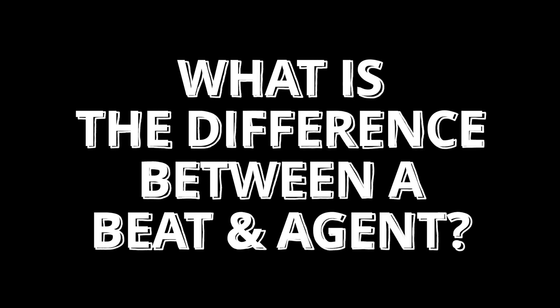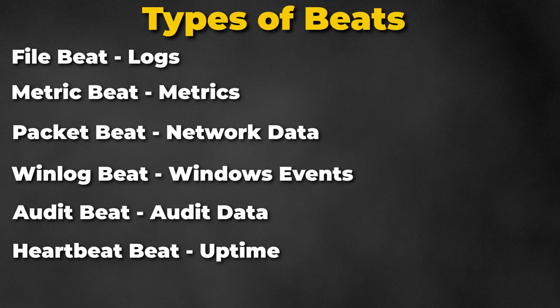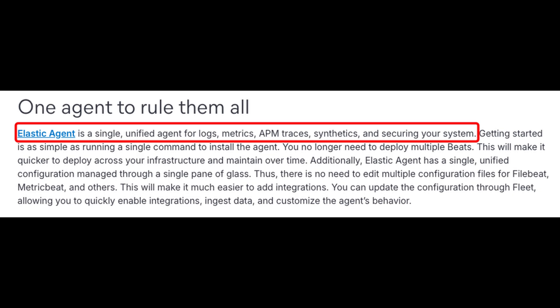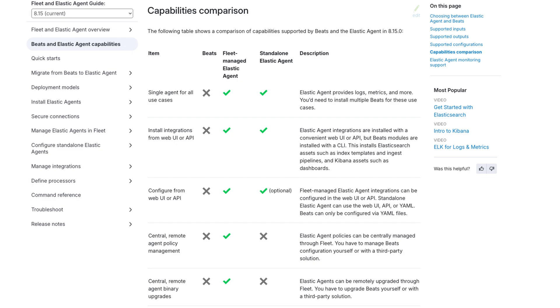Now if you recall our day 2 discussion where I provided an introduction to the ELK stack, you might be wondering what is the difference between a beat and an agent, and which one should you choose? To recap, there are 6 different types of beats, and depending on what data you want to collect, you might need to install multiple beats on a single host. Whereas an Elastic agent is one single agent that will collect various different types of logs, and they both send data to either Elasticsearch or Logstash. When it comes to selecting which one to choose, it really depends on your use case, but more often than not, the Elastic agent should suffice.